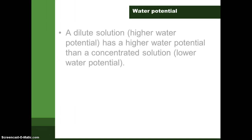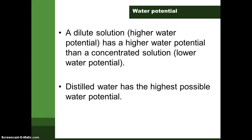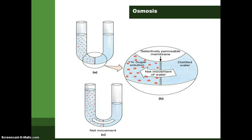A dilute solution has a higher water potential than a concentrated solution. Distilled water has the highest possible water potential. In this diagram, there is a membrane in the middle separating a 1% sugar solution and distilled water. There is a high water potential in the distilled water; hence, there is a net movement of water molecules from the distilled water side toward the sugar solution side.